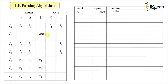Here i0 is the starting state, and the input I have taken is 'a b b'. Now we'll check i0 on input 'a' — i0 on input 'a' goes to state i3. That is a shift action, and it is written here as shift i3.